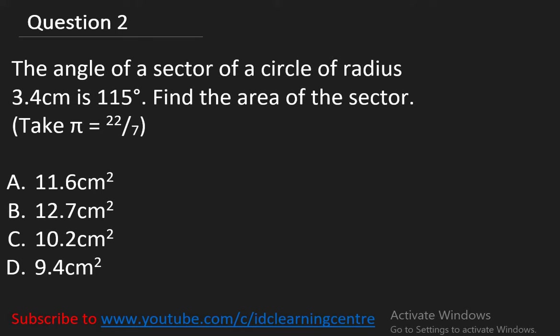Question number 2 says: The angle of a sector of a circle of radius 3.4 cm is 115 degrees. Find the area of the sector. Take pi as 22 over 7. The formula for calculating the area of a sector is theta over 360 times the area of a circle, which is pi r squared.